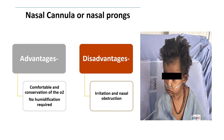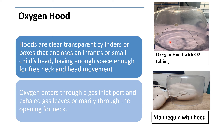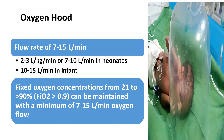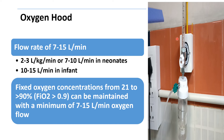The second device is the oxygen hood — a clear transparent cylinder or box-shaped device that covers the infant's head and neck area, allowing the baby to move the head freely. Oxygen tubing is inserted at the inlet port and connected to the oxygen source; exhaled gas leaves from the neck area. Flow rate in the oxygen hood should be set between 7 to 15 L/min: in neonates 2 to 3 L/kg/min or 7 to 10 L/min; in infants 10 to 15 L/min.